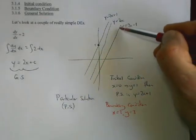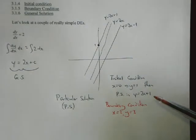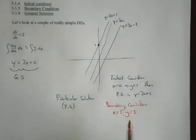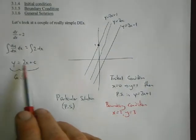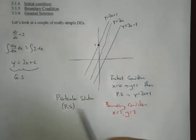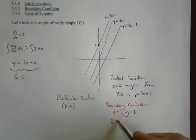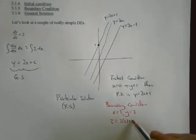Of say x equals 2 and y equals 3, so 2 and 3 up here somewhere, and we can find out which line that lies on by sticking these numbers back into our original equation.